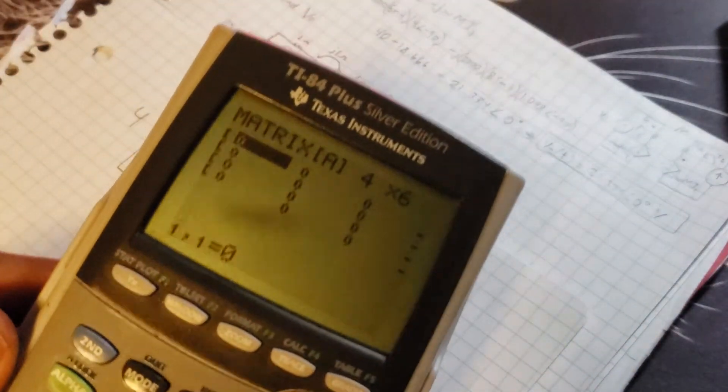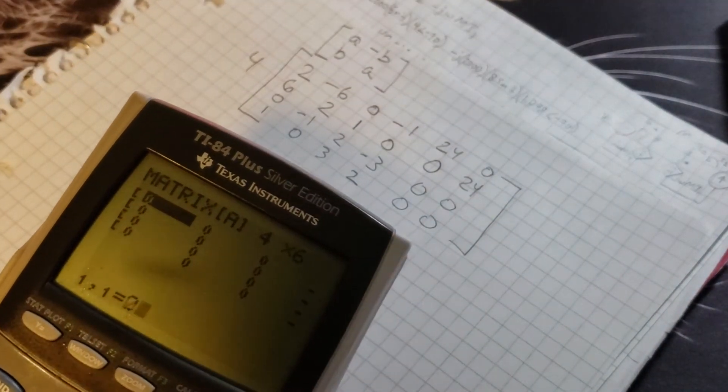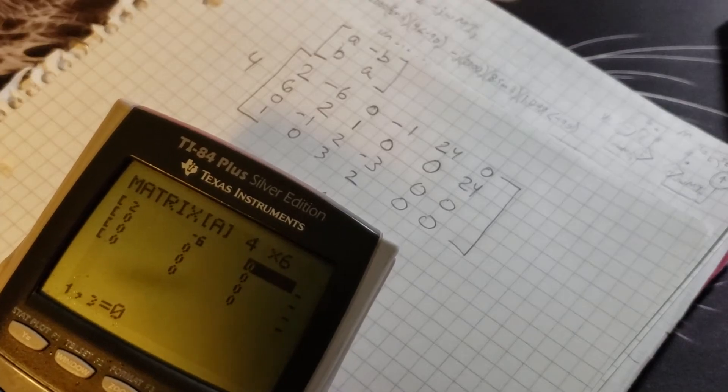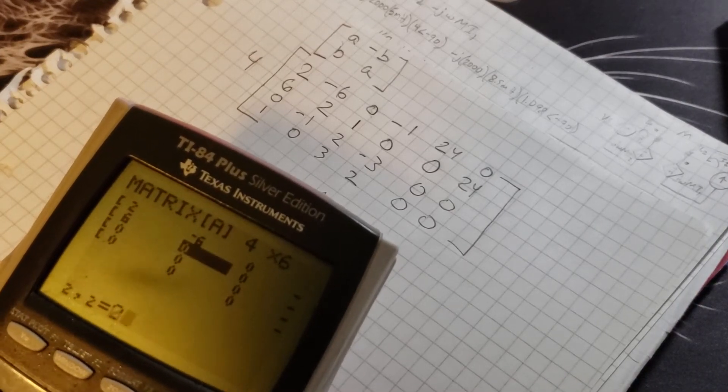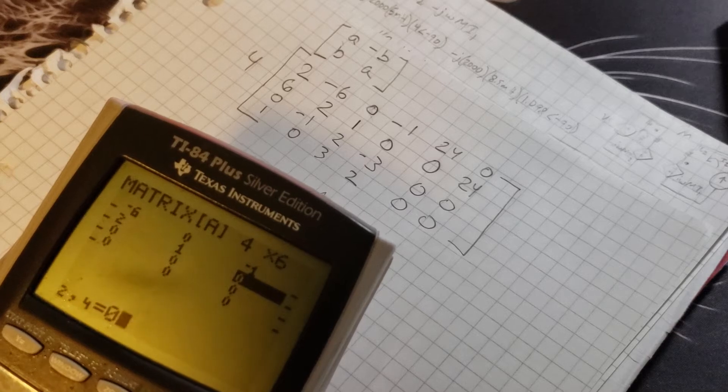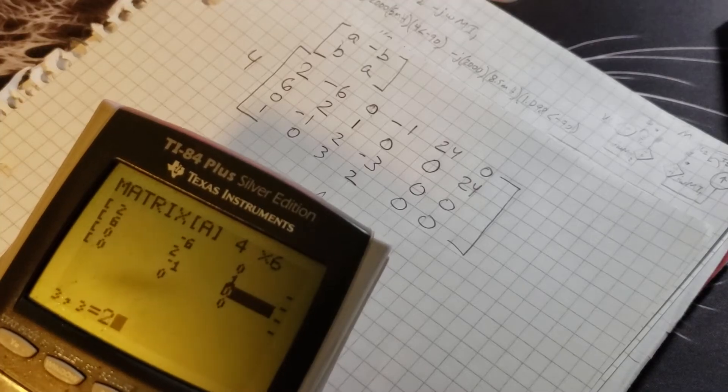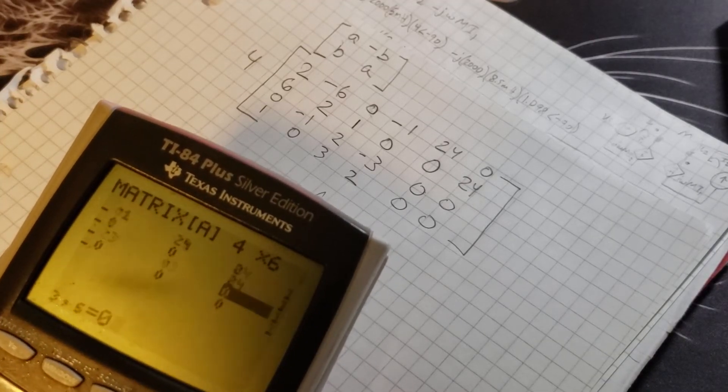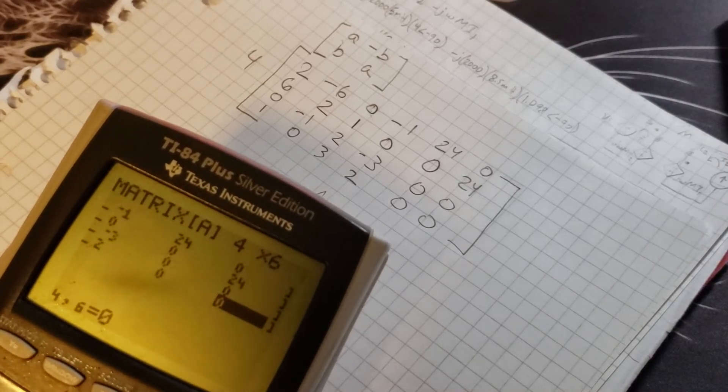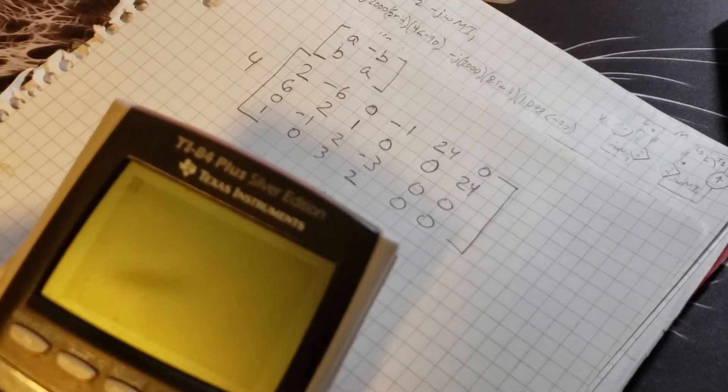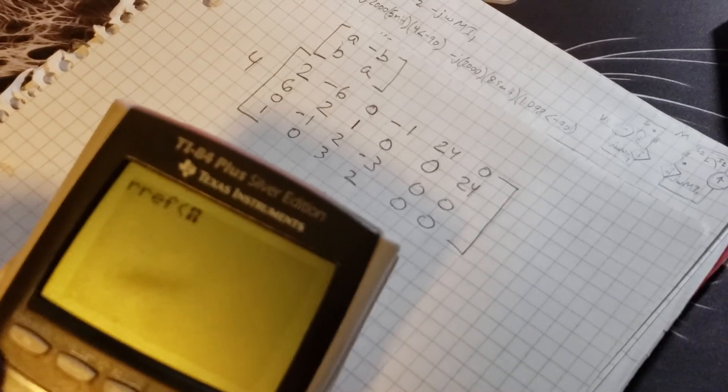This is what you type in the calculator: 2, negative 6, 0, negative 1, 24, 0; 6, 2, 1, 0, 0, 24; 0, negative 1, 2, negative 3, 0, 0; 1, 0, 3, 2, 0, 0. Then second quit, second matrix, go over to math, scroll up and click on rref, second matrix again, choose the one you stored it in, close bracket and press enter.